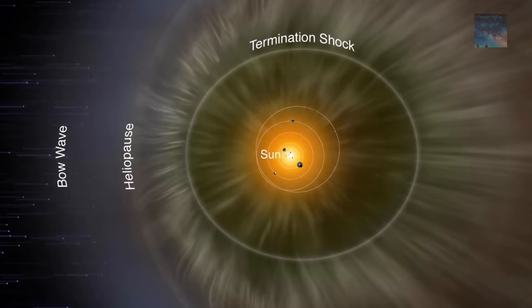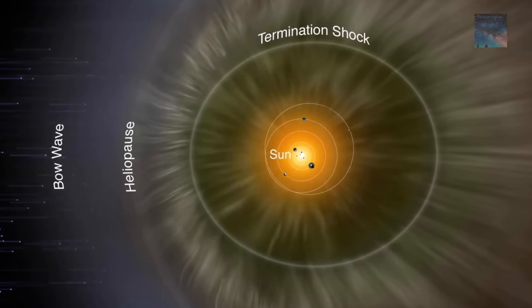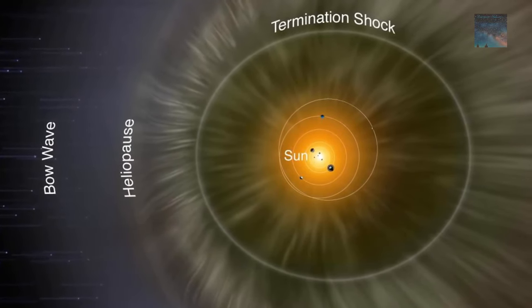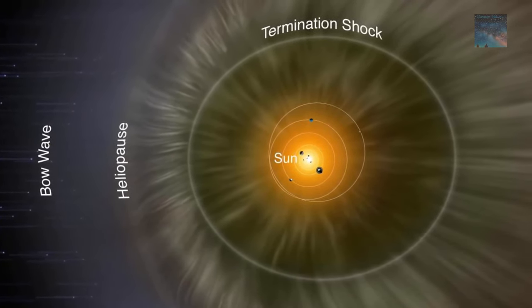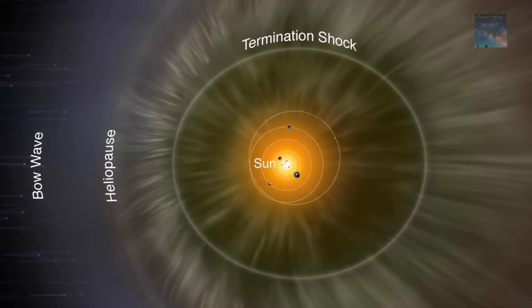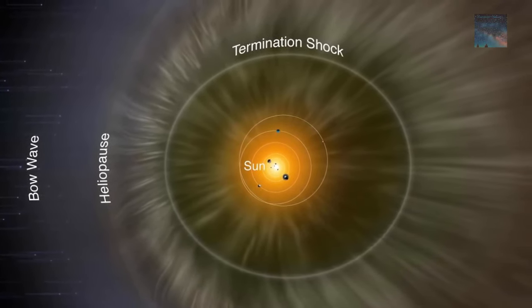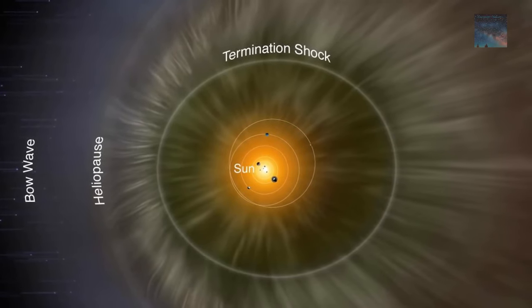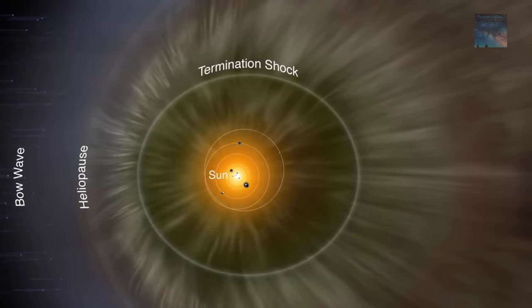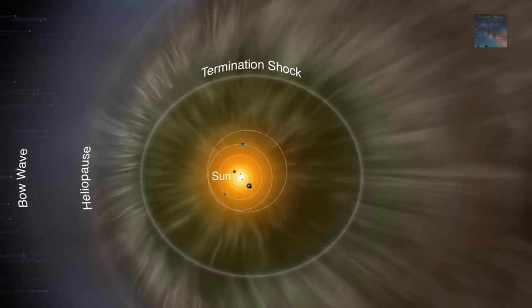The first of these is known as the termination shock. Before passing the termination shock, the solar wind expands rapidly, largely unimpeded by outside material. But at the termination shock, roughly 9.3 billion miles away from us in every direction, the solar wind slows down abruptly. Beyond this point it continues to move outwards, but it is much hotter.